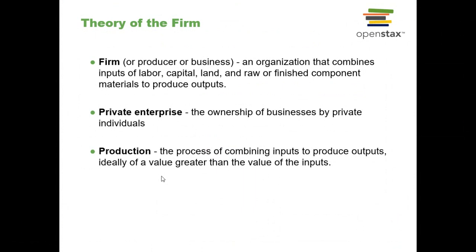When you go to the store, part of that process is actually getting in your car and going — that's a transaction cost. Firms reduce transaction costs by bringing together everybody who is needed to make a good or service under one roof, so you don't need to contract with every single person. In an auto manufacturing plant, they have welders, electricians, engineers, designers, human resources, a CEO and management team. In a purely free market world, all those people would be contracting with one another and there would be huge transaction costs. The firm brings everyone together so there's just one contract with the firm.